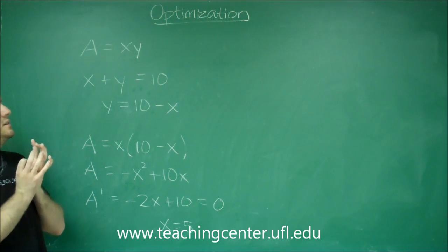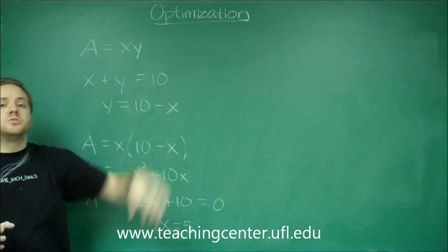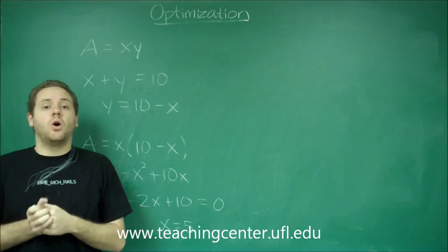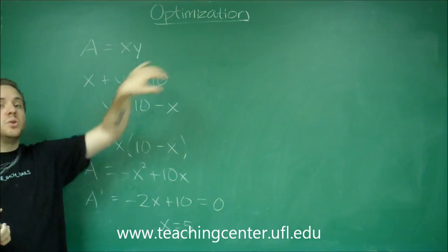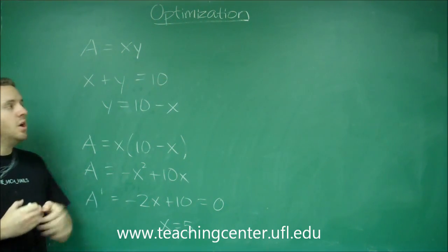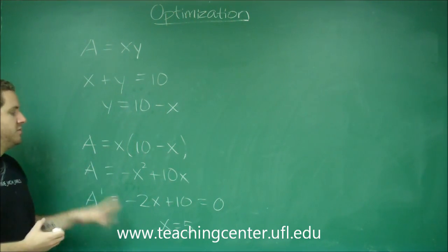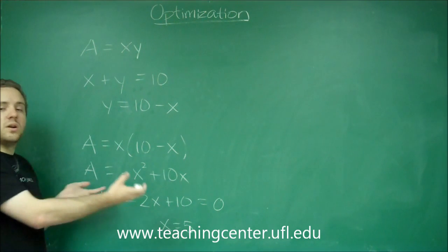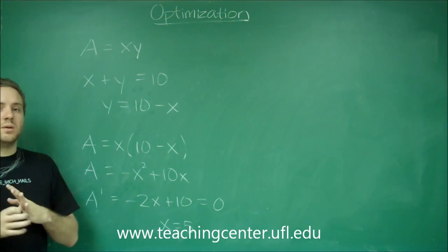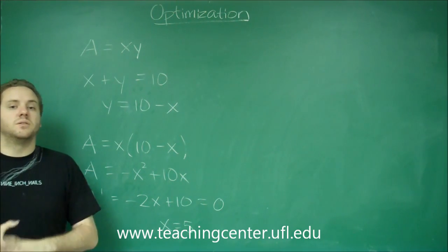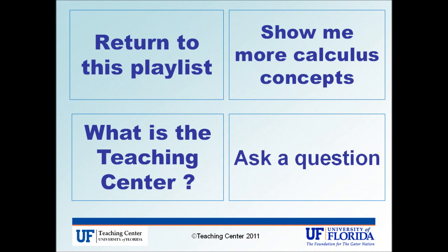Basically what it boils down to is always get an equation that is equal to the thing that you're trying to maximize or minimize. That should always be pretty straightforward. The next part is, if that equation has more than one variable, you need something else that will let you substitute. Once you substitute, it's just a matter of doing the derivative. It could be a more complex function than this, but the derivative should always be the easy part of this problem - setting it equal to zero and solving your equation.